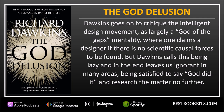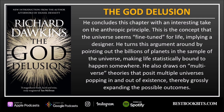Dawkins goes on to critique the intelligent design movement as largely a 'God of the gaps' mentality, where one claims a designer wherever no scientific causal forces can be found. But Dawkins calls this being lazy and says it ultimately leaves us ignorant in many areas — being satisfied to say 'God did it' and research the matter no further. He also addresses the Anthropic Principle — the concept that the universe seems fine-tuned for life, implying a designer — by pointing out the billions of planets in the universe, making life statistically bound to happen somewhere.